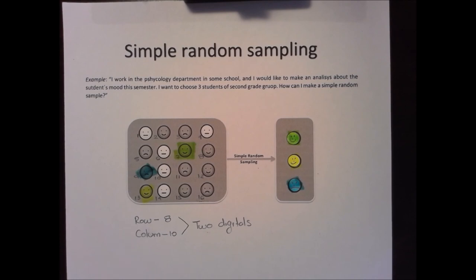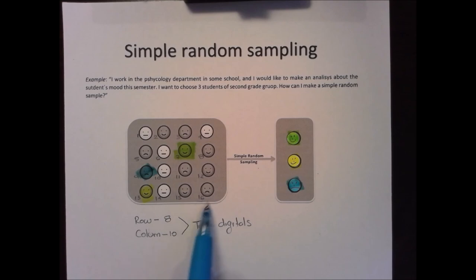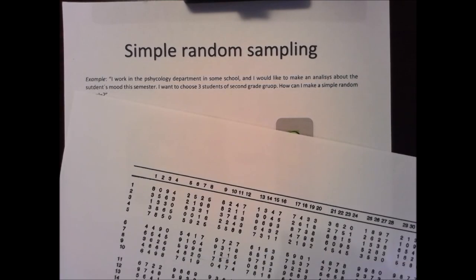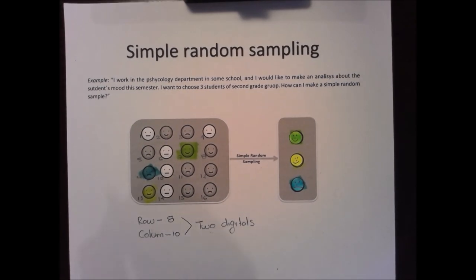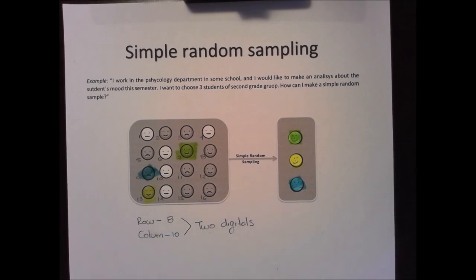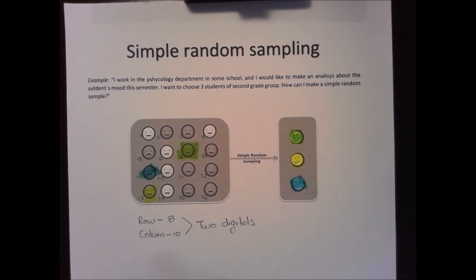It's very easy. Just remember: the first step is to assign a label to each element. Then, select a row and a column from the random number table. Check how many digits the last labeled element has, and use that many digits when reading from the table. Sometimes you find your numbers quickly, sometimes it takes more time, but at the end you will have your sample — and that is simple random sampling.